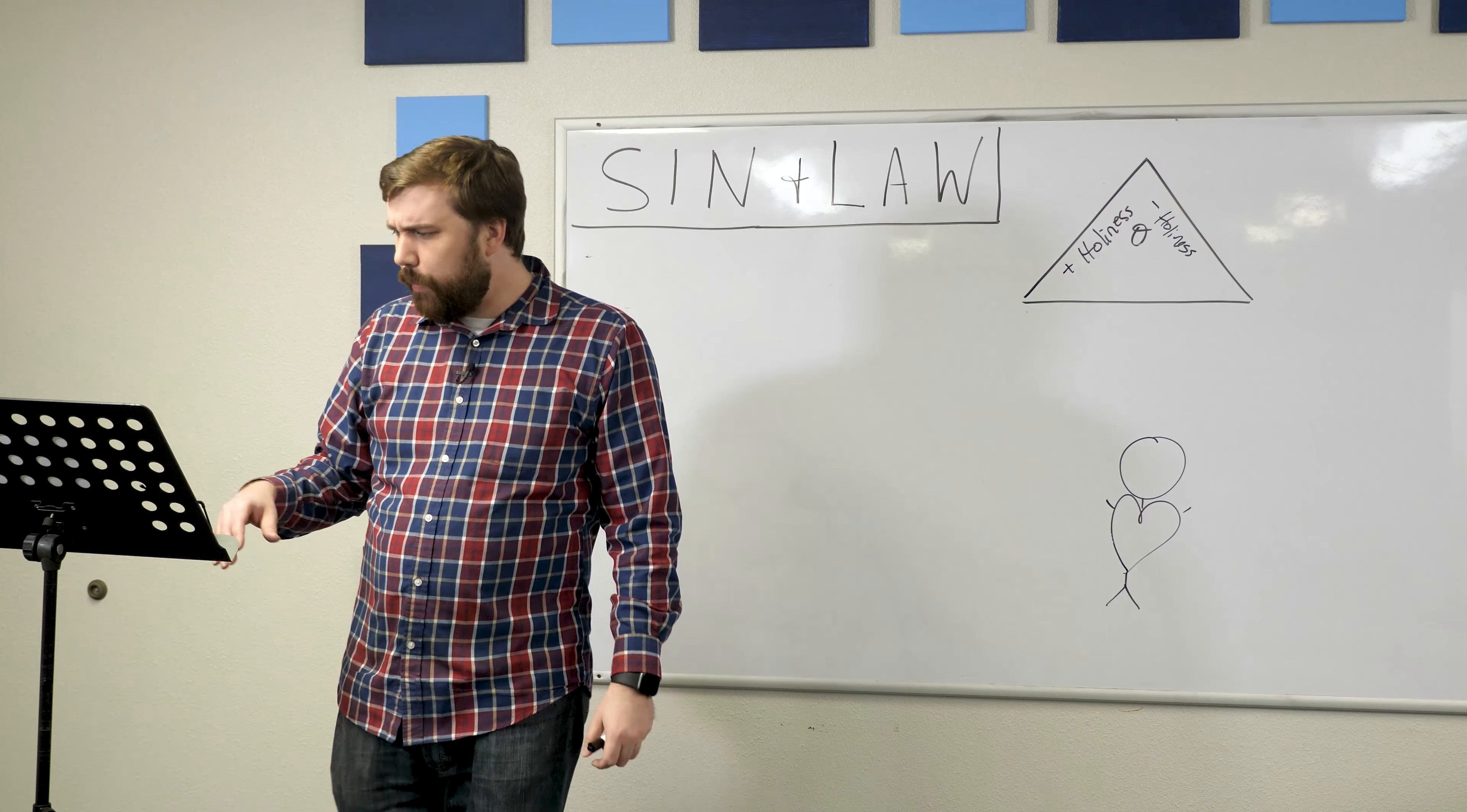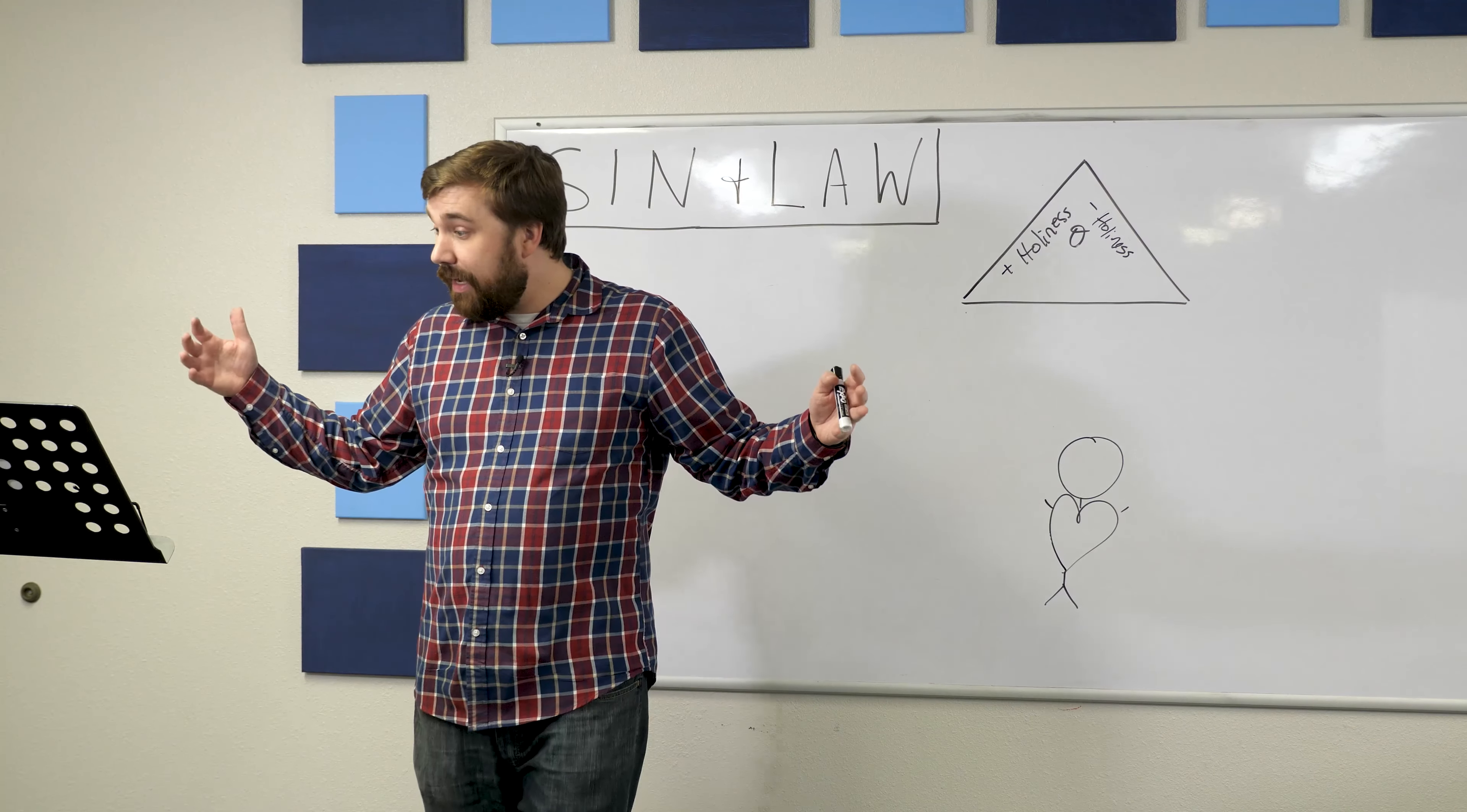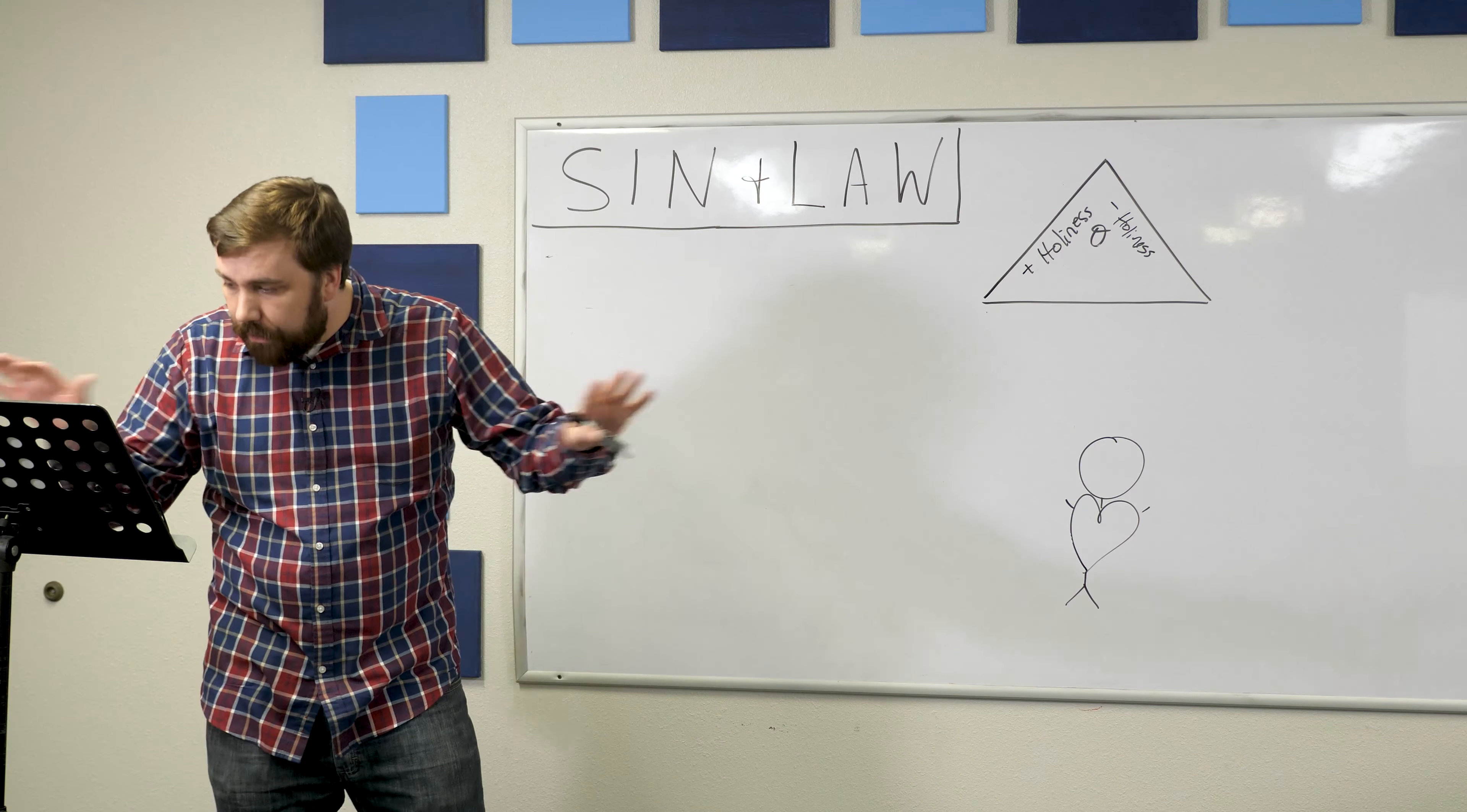Where do we get this? Habakkuk 1:13 is a great example. You, God, who are of purer eyes than to see evil and cannot even look at wrong. That's how holy God is. And so this holiness, positive and negative, we see this in Isaiah when the creatures are flying around the throne room of God. What are they saying? Holy, holy, holy is the Lord of hosts. The whole earth is full of his glory.